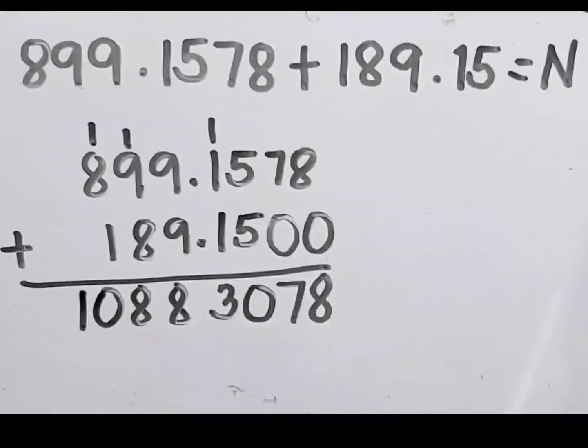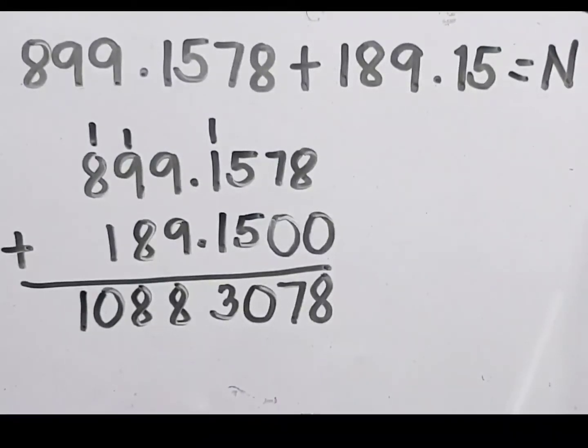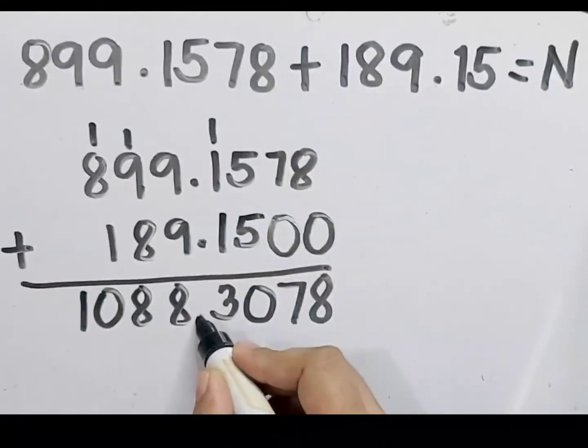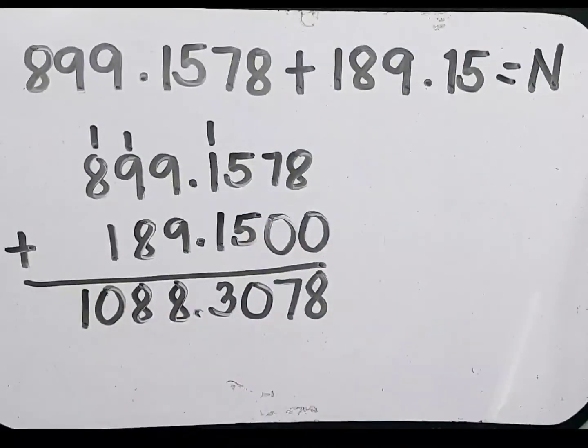Then let's place the decimal point in the sum. Align this with the decimal points of the addends. So here is the decimal point of the addends. Let's copy. Our answer is 1,088.3078.